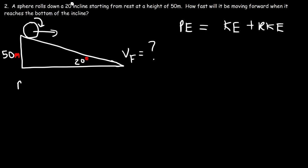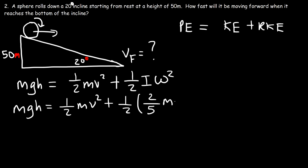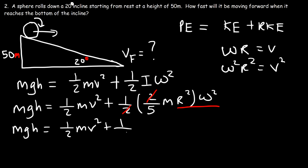The potential energy of the sphere initially is mgh, the kinetic energy is one half mv squared, and the rotational kinetic energy is one half inertia times omega squared. We don't have the mass of the sphere, so we need to cancel m out of the equation. The inertia of the sphere is two-fifths mr squared. Since omega times r equals v, we can replace r squared omega squared with v squared. We can cancel the twos, so mgh equals one half mv squared plus one-fifth mv squared.